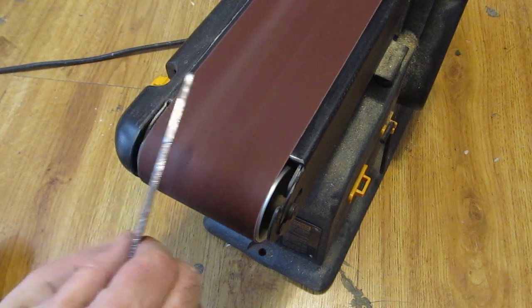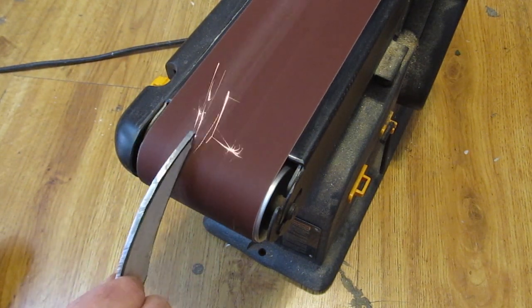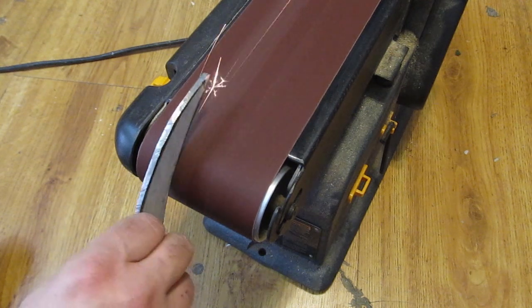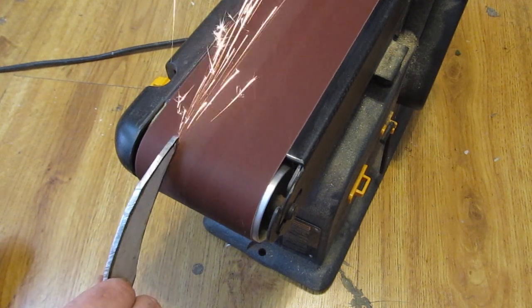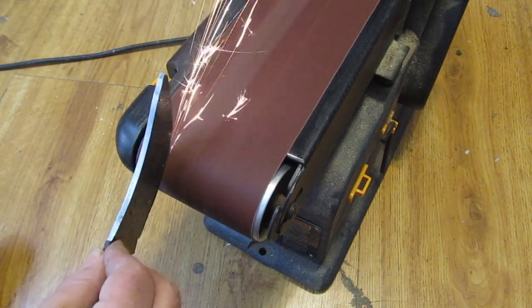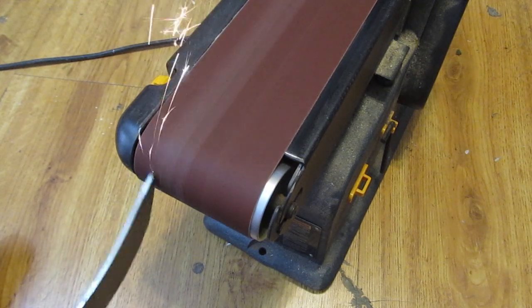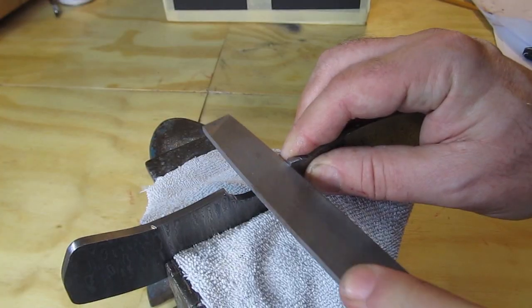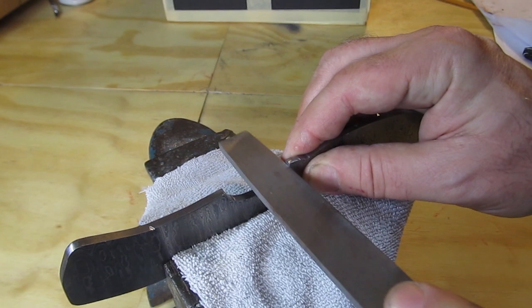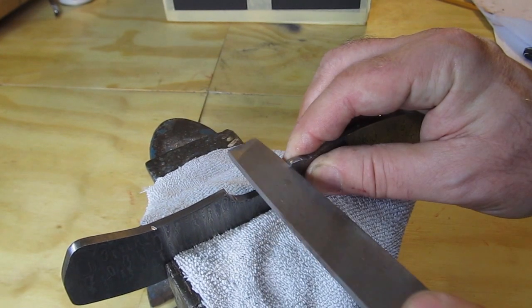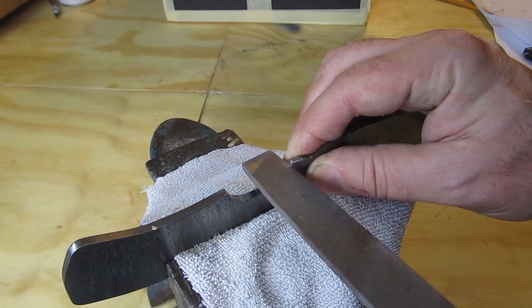A belt sander works good if you've got one. This is a four inch belt sander. 80 grit I'm using. You can use 50 grit. I'll also show you I use a little bit of a one inch belt sander too. Then you can move on to files and do some filing.